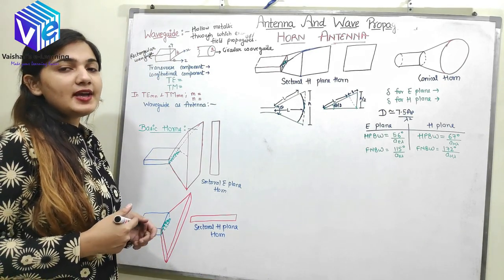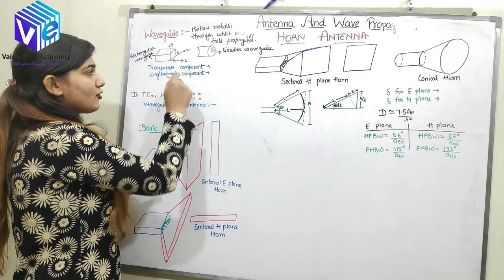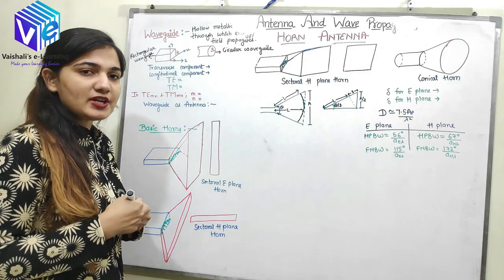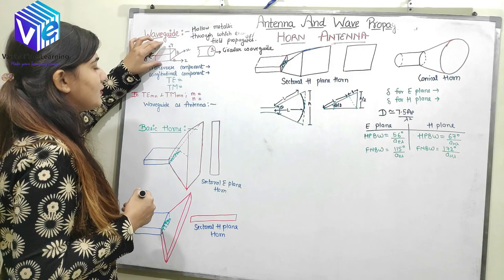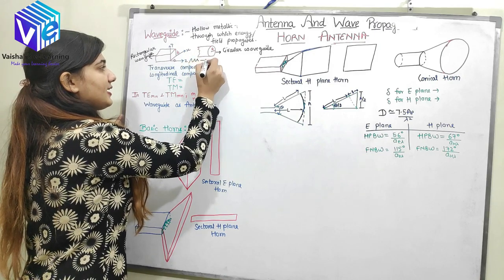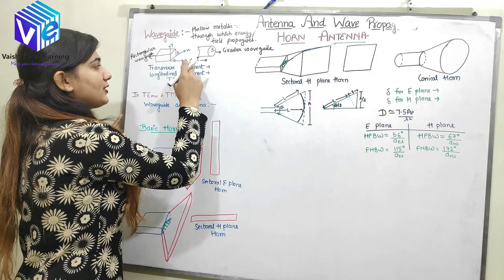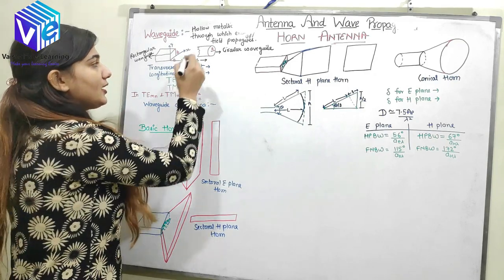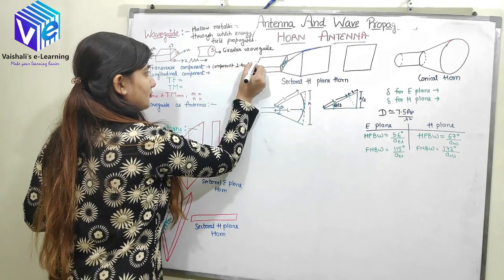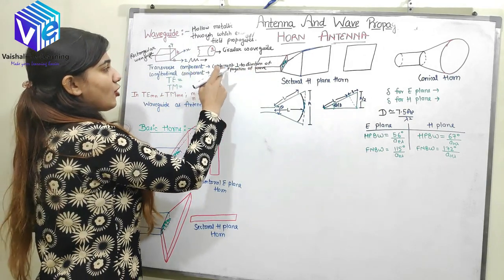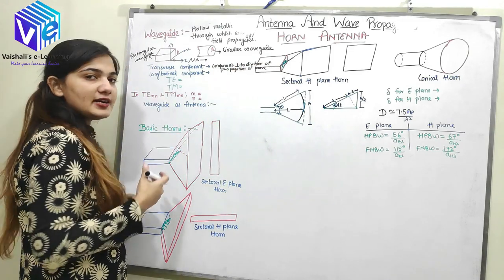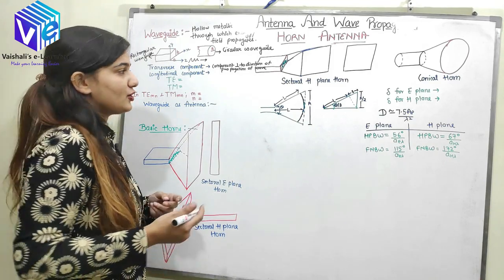Now we have transverse component and longitudinal component. The transverse component is the electric field in the perpendicular direction to the direction of propagation of the wave. If my wave is propagating in the Z direction, the transverse component is the component perpendicular to Z. Similarly, the longitudinal component is the component in the direction of propagation of the wave.